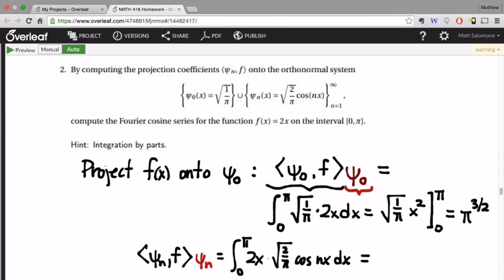the projection itself is equal to the coefficient, which we said was pi to the 3 halves, multiplied by the basis function, which is the square root of 1 over pi. And from there, we can reduce the powers of pi to give me just pi to the 1.